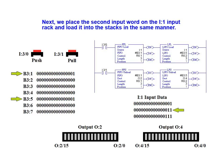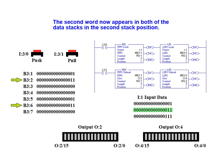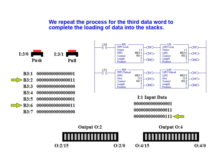Next, we place the second input word on the I:1 input rack and load it into the stacks in the same manner. The second data word now appears in both of the data stacks in the second stack position. We repeat the process for the third data word to complete the loading of the data into the stacks.